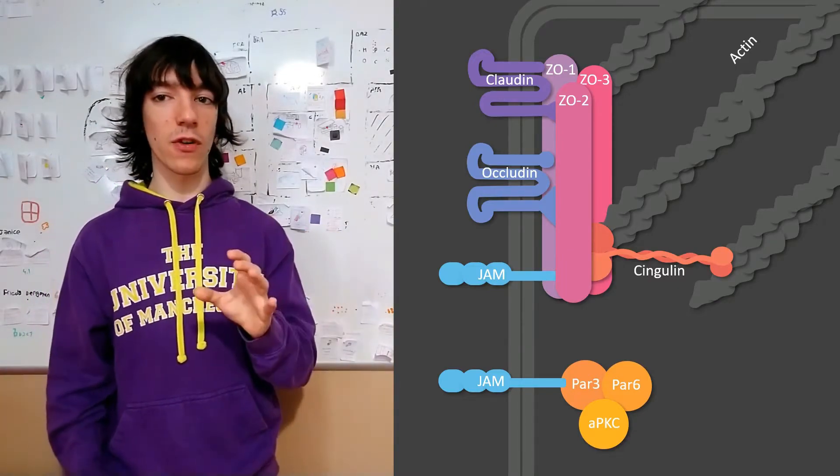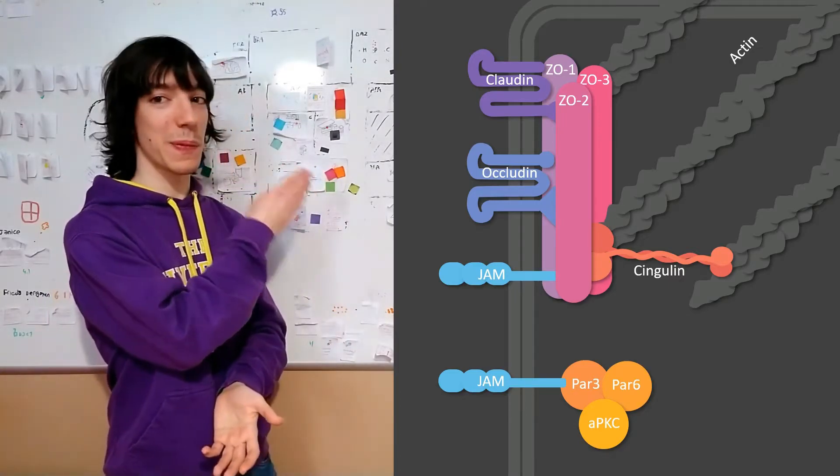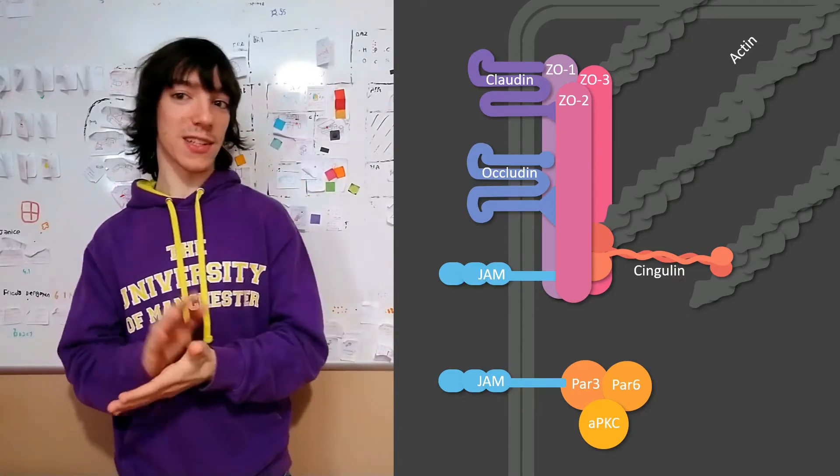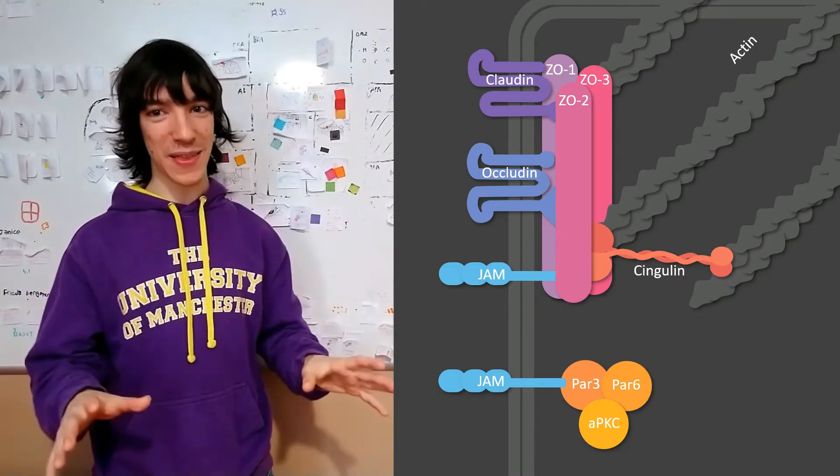This complex is involved in cell polarity. It's normally recruited to the apical side of cells or to other sides in other cells, maybe the distal or the anterior or the posterior side, it depends.